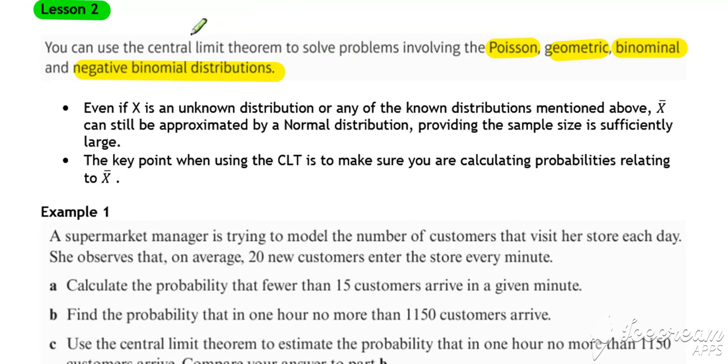The idea about the central limit theorem is it doesn't matter what the original distribution of X is, even if X is an unknown distribution, or it's any of the known distributions mentioned above. The whole point of the central limit theorem is that, providing the sample size is large enough, X bar can still be approximated by a normal distribution.